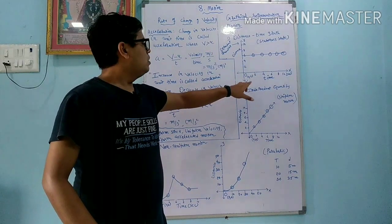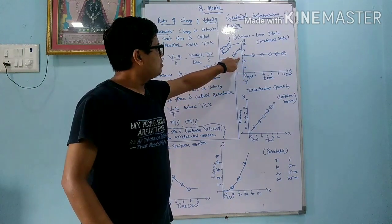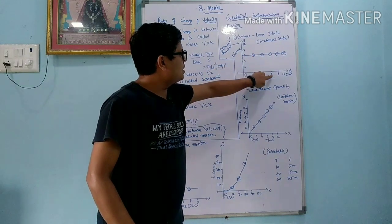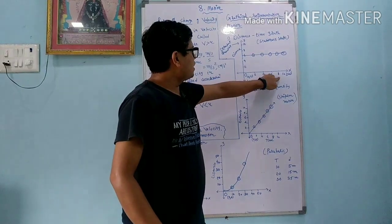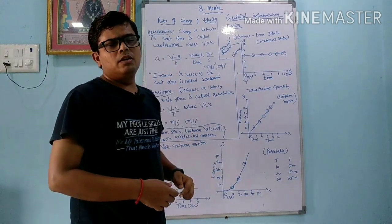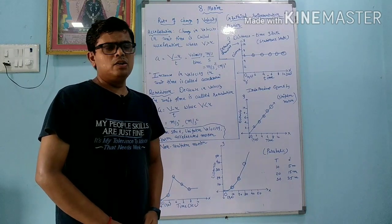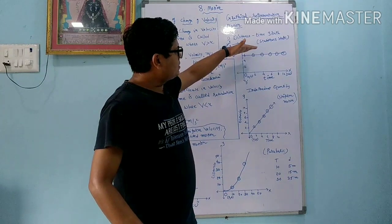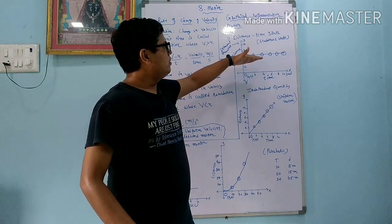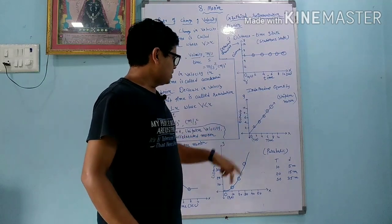The first graph: at zero time I cover 6 meters distance. After 2 seconds I cover 6 meters, after 4 seconds again 6 meters, after 6 seconds again 6 meters, after 8 seconds again 6 meters, and after 10 seconds again 6 meters. Time varies but distance remains the same, meaning the object is stationary. So if the graph is parallel to the x-axis, the object is in a stationary state.